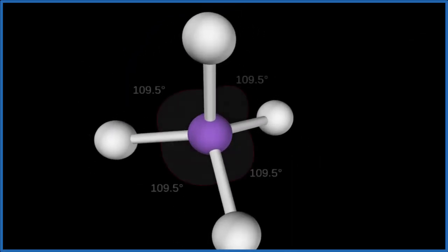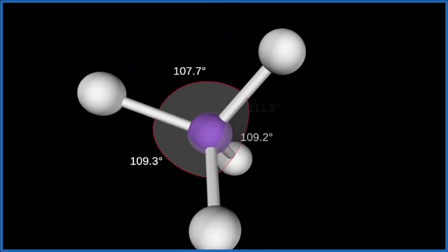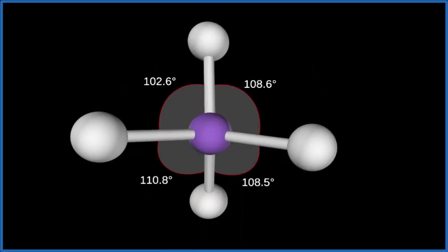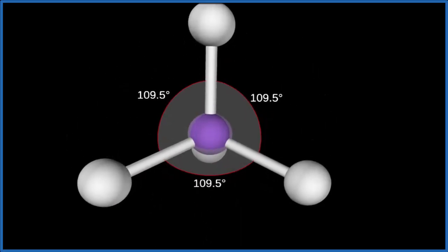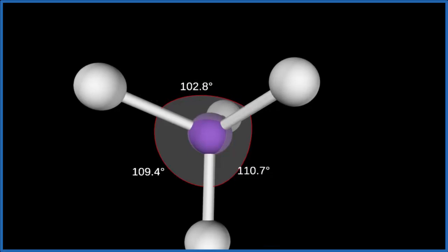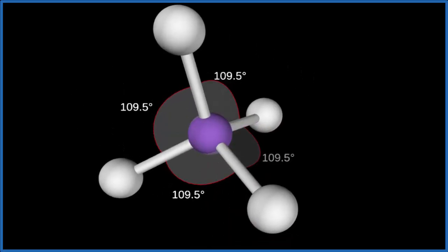If we want to look at the bond angles, they should be 109.5 degrees. If we want to look at the electron geometry, that takes into account the lone pairs, except there aren't any lone pairs. So the electron geometry, that's also going to be tetrahedral. Let's go back to our Lewis structure.